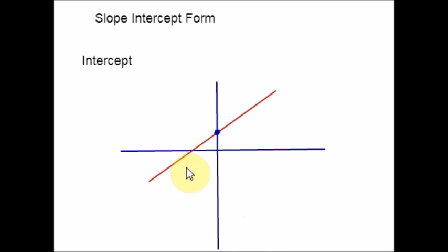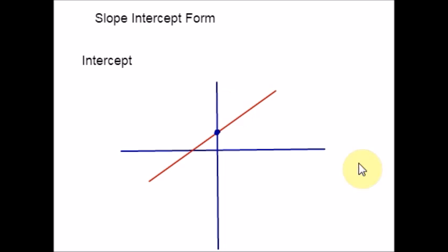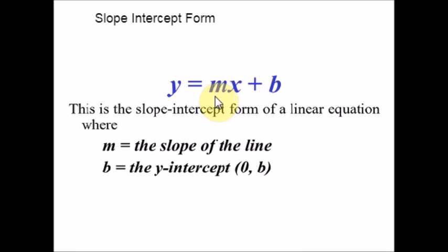Now let us see what is meant by slope-intercept form. There are a few different ways to write the equation of a line. One of the most common standard ways is called slope-intercept form. It is called this because it clearly defines what the slope and y-intercept are in the equation. The slope is just a number — the coefficient of x — written before the x. The y-intercept is the constant written at the end, which is b. So the y-intercept here is (0, b).